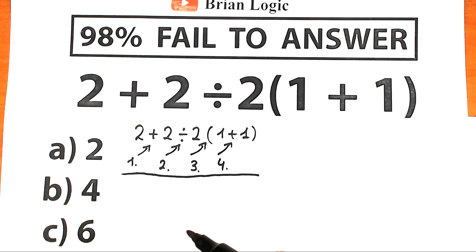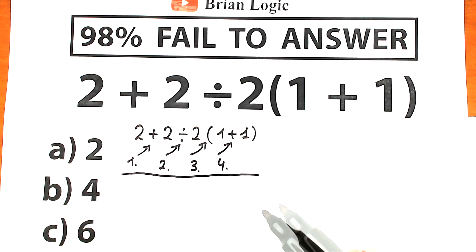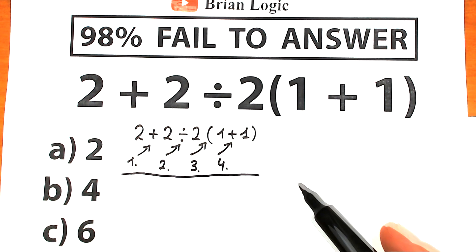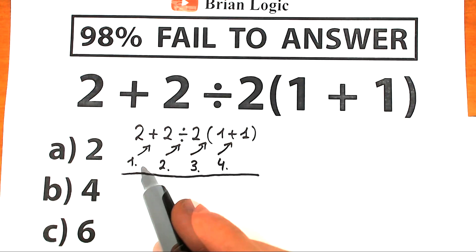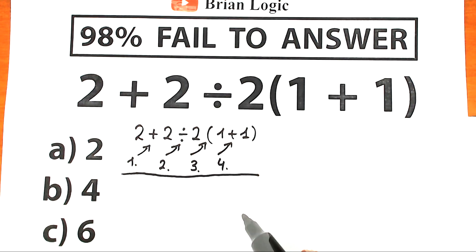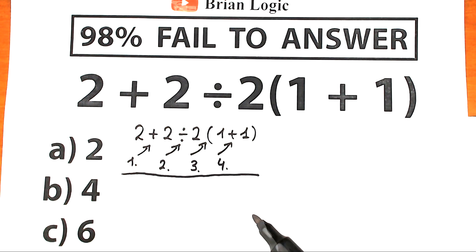Just like in biology we should know the correct definition and correct properties, and in chemistry we should know the correct definitions — in math we should know the correct order of operations. We should know how to do this correctly according to math properties and math rules.